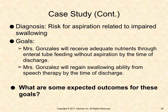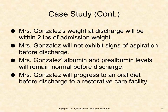Mrs. Gonzalez has a nursing diagnosis of risk for aspiration related to impaired swallowing. Goals are: Mrs. Gonzalez will receive adequate nutrients through enteral tube feeding without aspiration by discharge, and will regain swallowing ability from speech therapy by discharge. Expected outcomes include: weight at discharge within 2 pounds of admission weight; no signs of aspiration before discharge; albumin and prealbumin levels remaining normal; and progression to an oral diet before discharge to a restorative care facility.